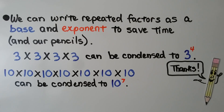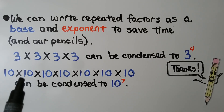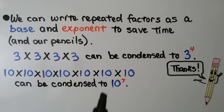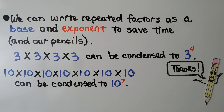We can write repeated factors as a base and exponent to save time. 3 times 3 times 3 times 3 times 3 can be condensed to 3 to the 4th power. And if we have 10 times 10 times 10 times 10 times 10 times 10 times 10, that can be condensed to 10 to the 7th power — we have 7 factors of 10.